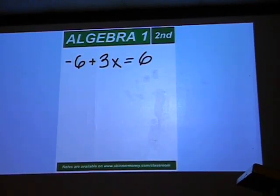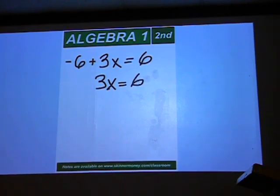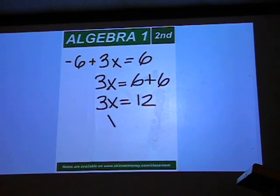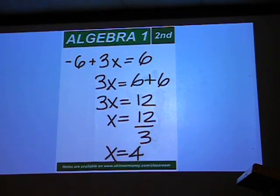Negative 6 plus 3x equals 6. You're going to keep the 3x on the left, 6 on the right, but the negative 6 must move to the right side and become plus 6. 6 plus 6 is 12, and you must divide the 12 by 3 to get a final answer of positive 4.